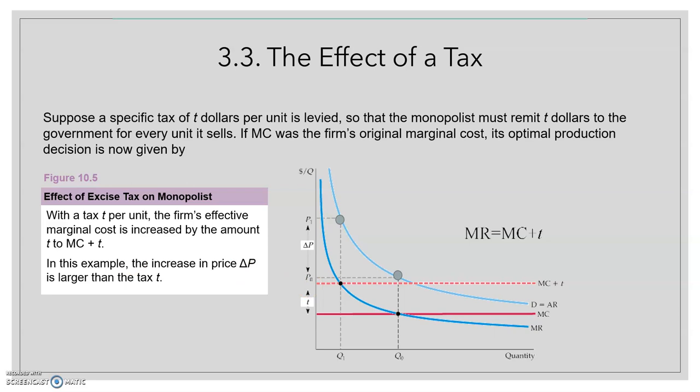So this is the main difference between the tax imposed in the monopoly and the tax imposed in perfect competition. We find that sometimes in the monopoly, the increase in price can be larger than the tax. Not always, but many times. And this would be impossible in a competitive market.